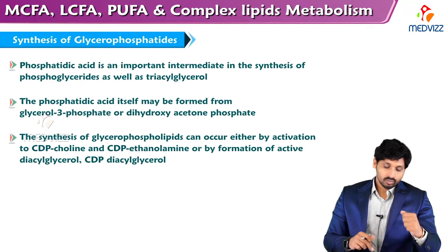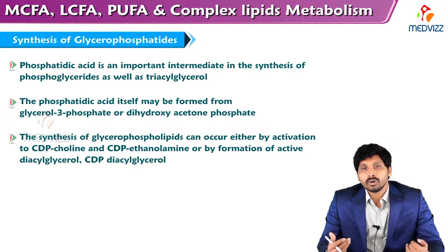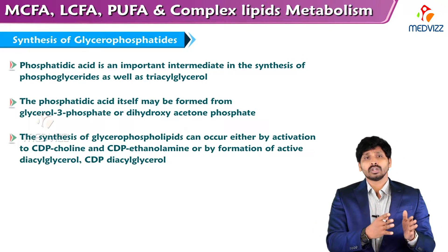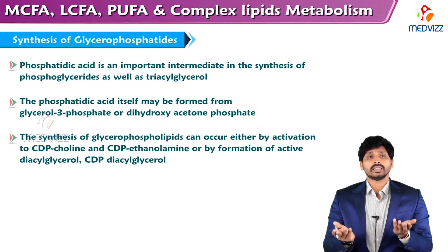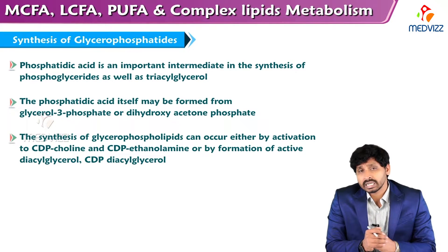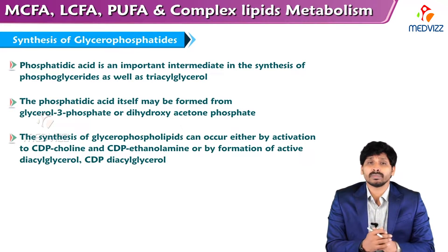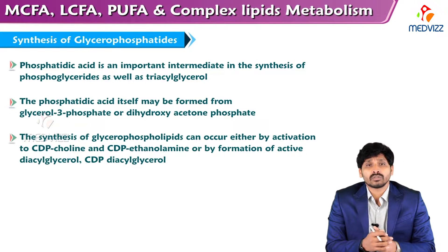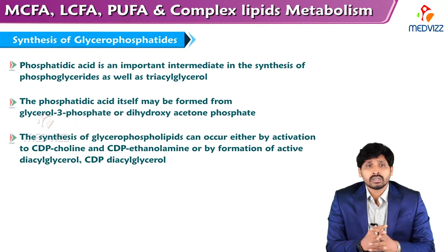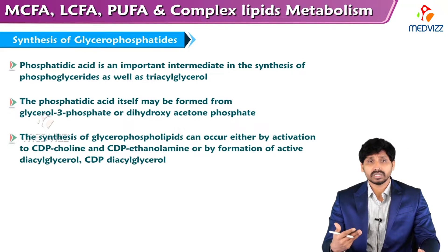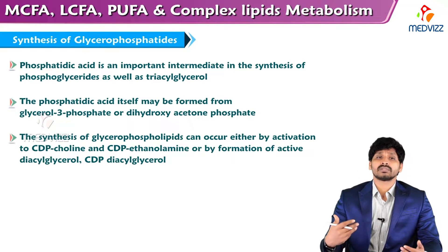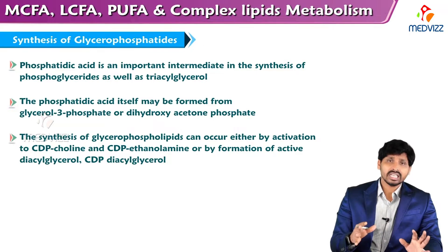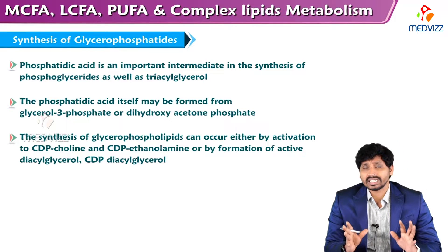Now we will be discussing about complex lipids. Complex lipids are of different types: phospholipids, glycolipids. Phospholipids again convert to glycerophospholipids and sphingophospholipids, and glycolipids are again of different types — gangliosides, cerebrosides, and sulfatides. We will start from glycerophospholipids — how these glycerophospholipids will be synthesized. The main thing for complex lipids is phosphatidic acid formation.